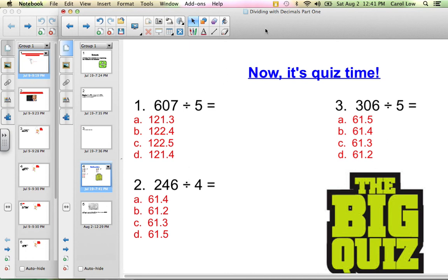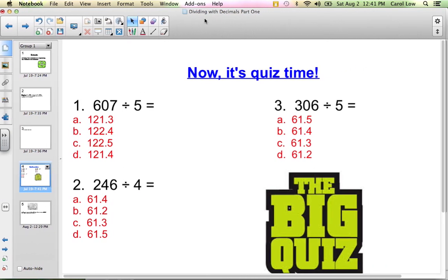It's quiz time. So, we went right from that into a quiz. So, I want you to write these problems down. Remember to put the decimal point after the whole number. So, this one you would put 607.00 divided by 5. This one you would put 246.00 divided by 4. This one, I'm sure you're getting it, is 306.00 divided by 5.